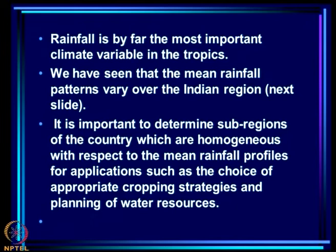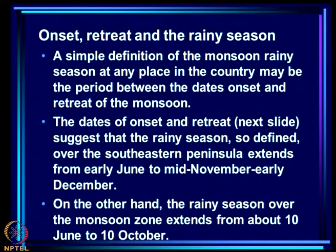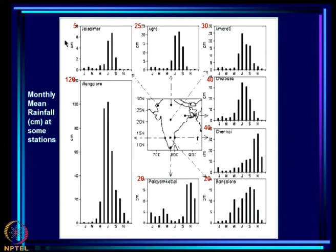It is important to determine sub-regions of the country which are homogeneous with respect to the mean rainfall profiles, for applications such as the choice of appropriate cropping strategies and planning of water resources. This problem was given to us by a scientist from the International Crop Research Institute for Semi-Arid Tropics, who wanted to think about optimum cropping patterns based on mean rainfall similarity between locations belonging to the same homogeneous region.